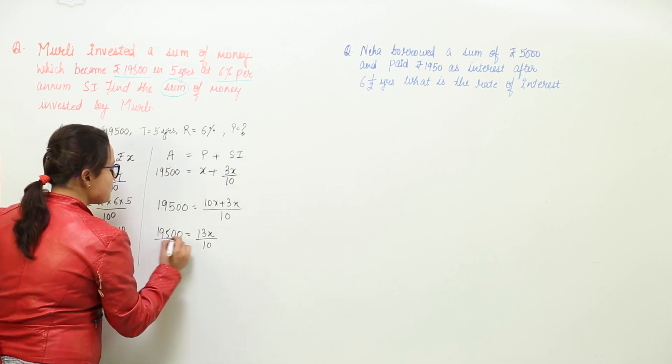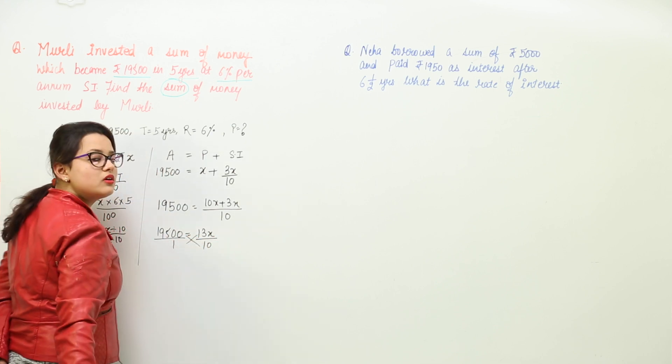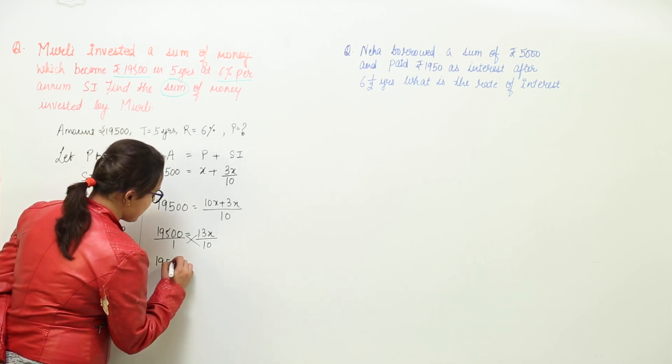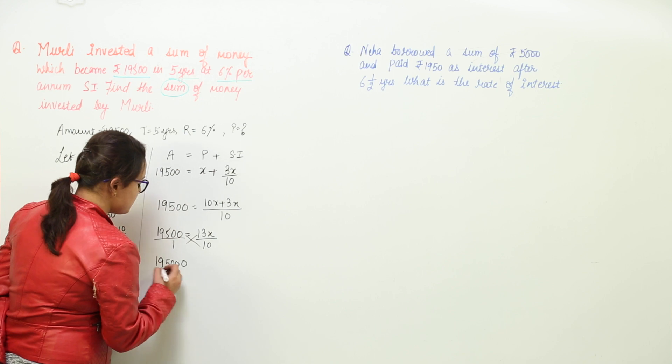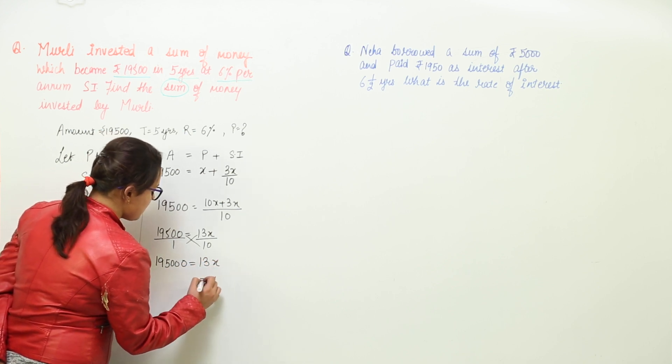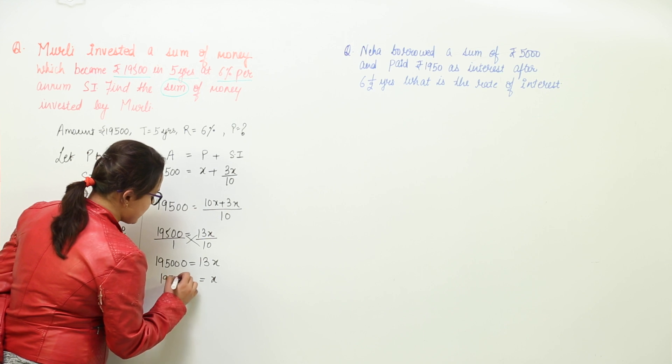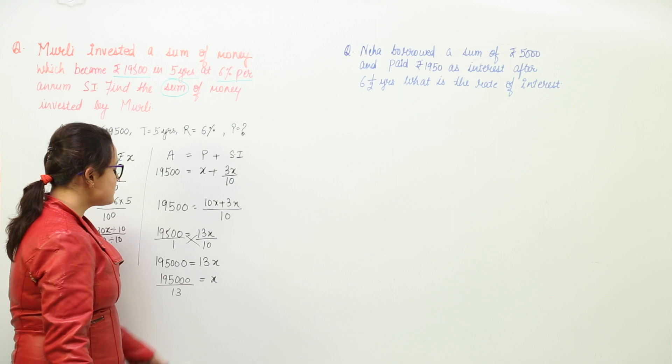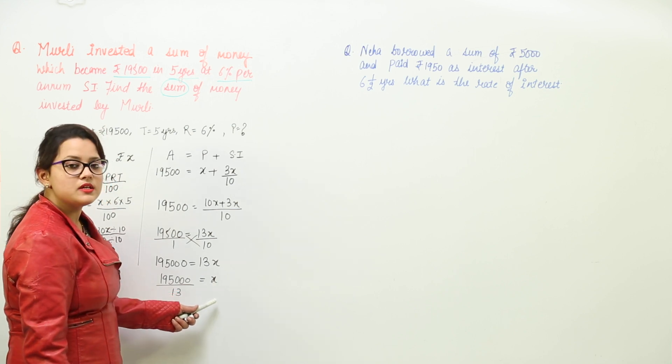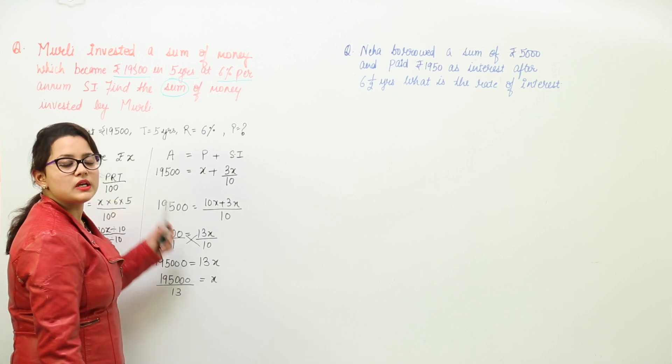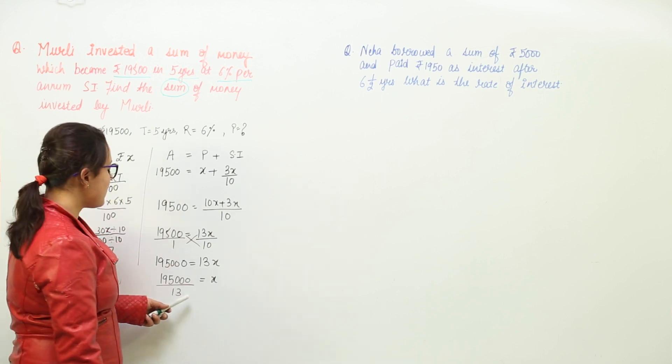Now you can cross multiply both of them because nothing can be solved any further. So on cross multiplication we get 19,500 into 10 which will be this equal to 13x. Now x will come out equal to 195,000 divided with 13 because I am calculating x that means what was the assumed value of x? It was P only. So whatever be the value of x will be my value for P.